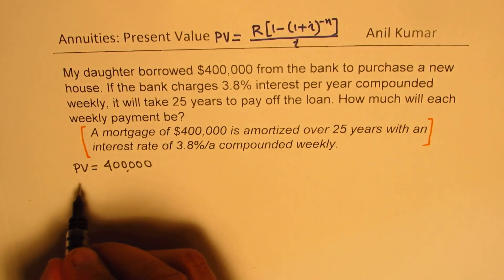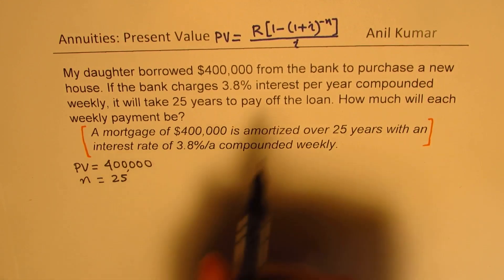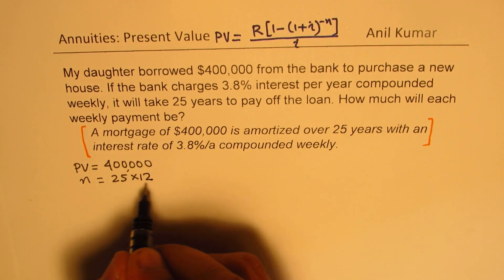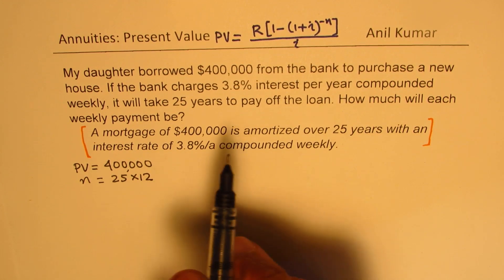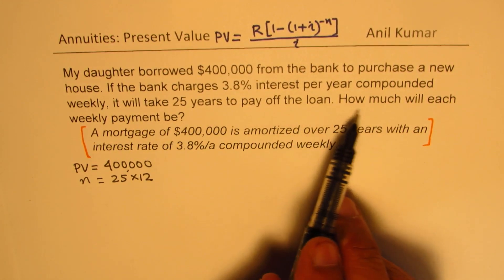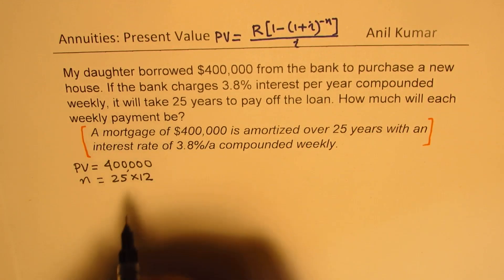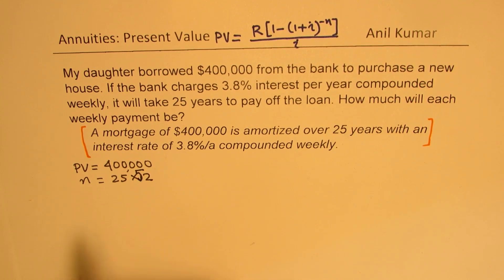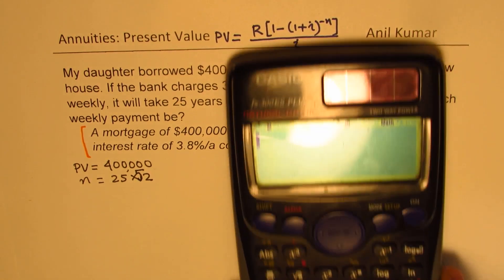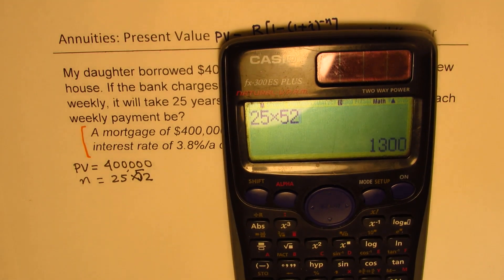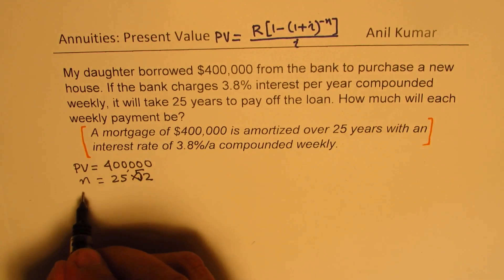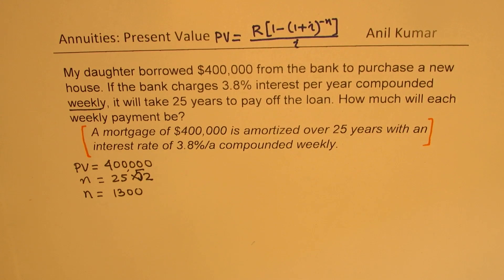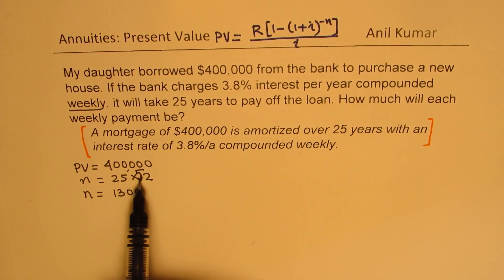N is 25, but we are paying weekly. Since it is being paid weekly, we multiply 25 by 52, because there are 52 weeks in a year. So 25 times 52 equals 1,300. Therefore, N for us is equal to 1,300.